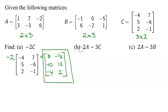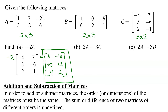In part B, we need to find two times matrix A minus three times matrix C. Let's quickly review the rules for adding and subtracting matrices. In order to add or subtract matrices, the order or dimensions of the matrices must be the same. So let's check part B.